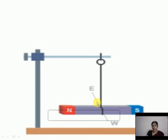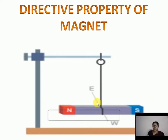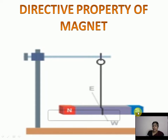What is this directive property of magnet? A freely suspended magnet always points in the north and south direction. This freely suspended magnet always shows the north and south direction. This property is known as the directive property of magnet. Not only a bar magnet — any shape of magnet, irregular shape also, it always shows the north and south direction.